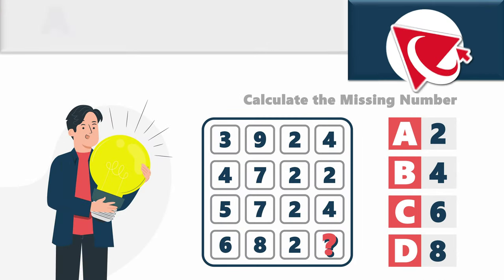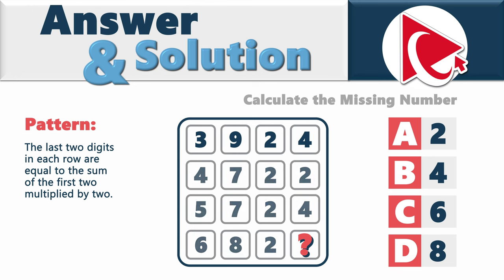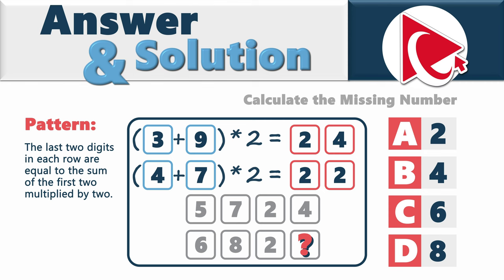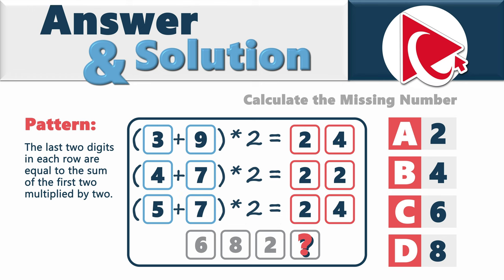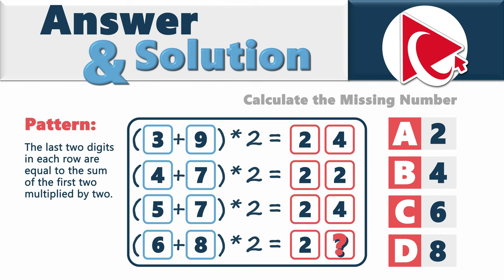The pattern here is rather simple: the last two digits in each row are equal to the sum of the first two digits multiplied by 2. The first row has numbers 3, 9, 2, and 4 — 3 plus 9 equals 12, multiplied by 2 equals 24. Similarly: 4 plus 7 multiplied by 2 equals 22; 5 plus 7 multiplied by 2 equals 24; and 6 plus 8 multiplied by 2 equals 28.